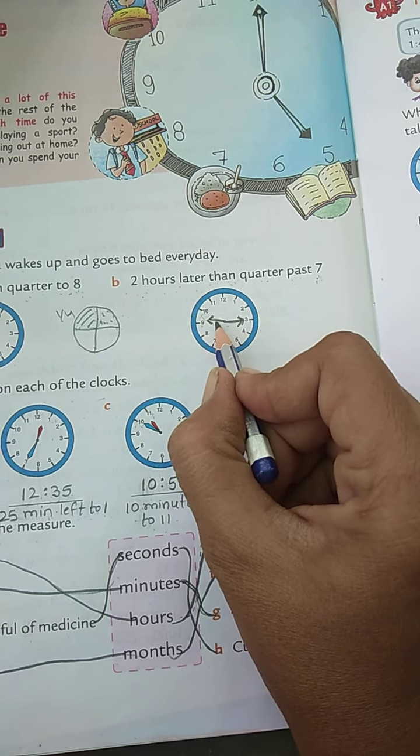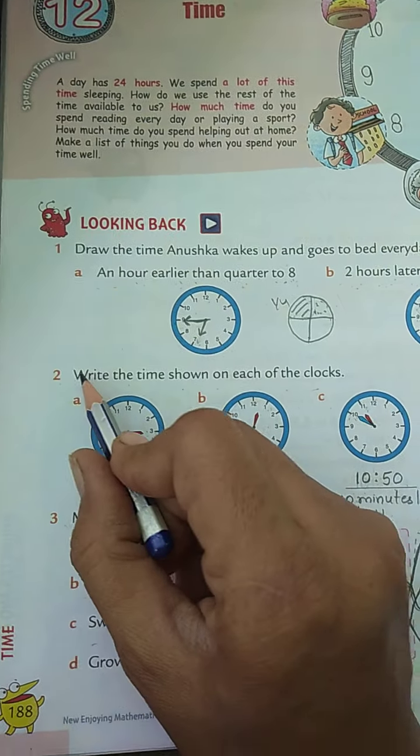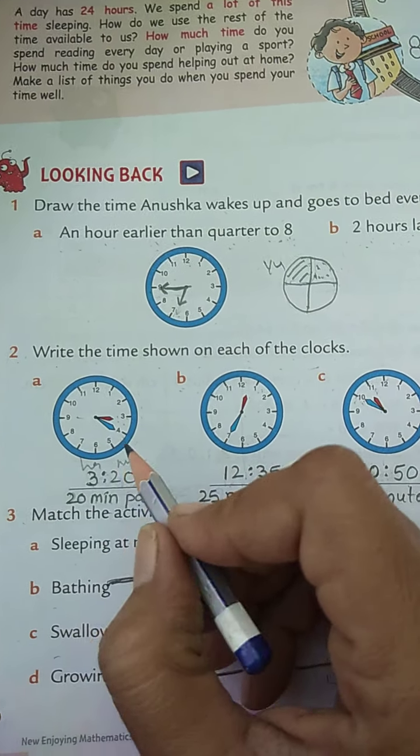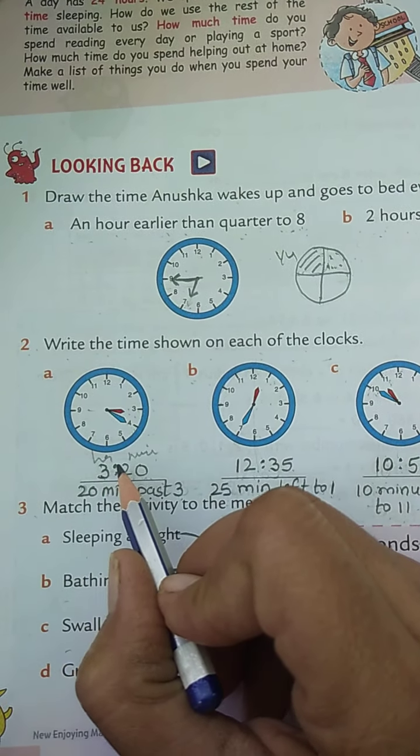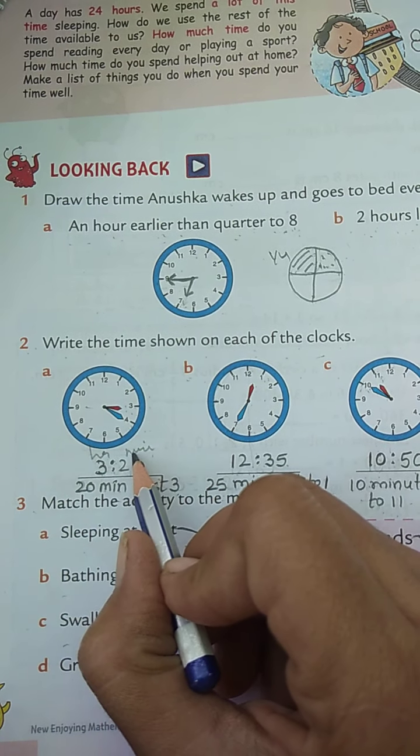Let us go to question number two: write the time shown on each of the clocks. Here they have shown us. Now what you will do: first you have to keep two dots in between. Before the dot, here hours will come, and afterwards minutes will come.